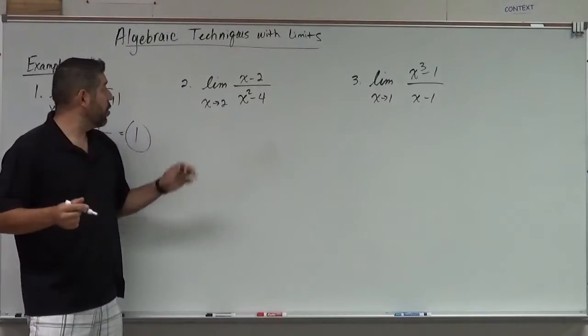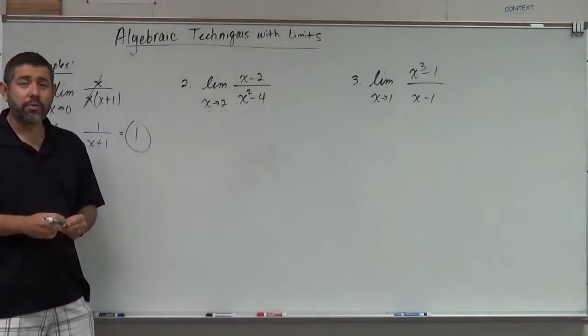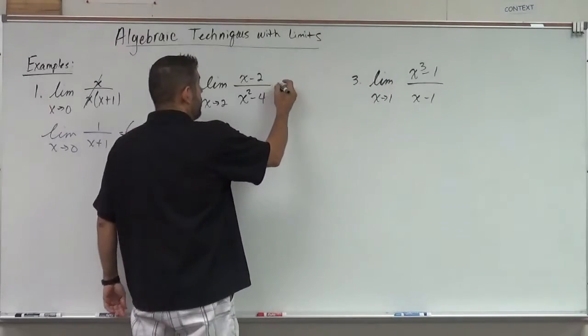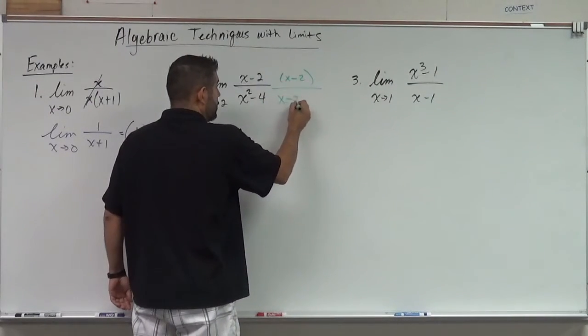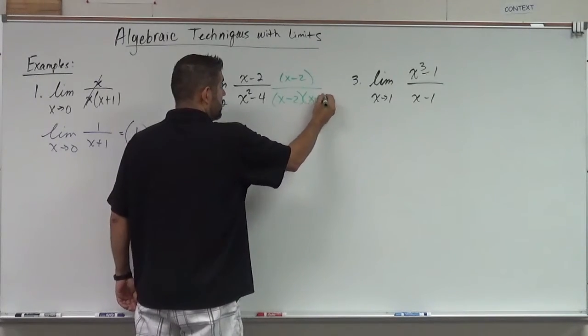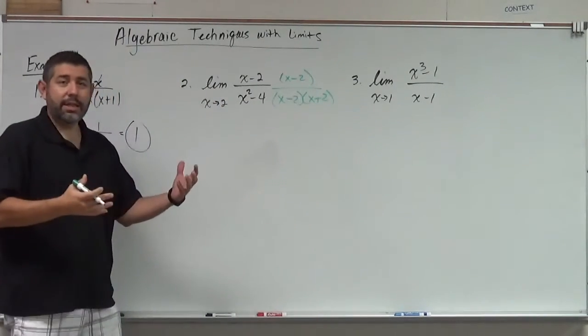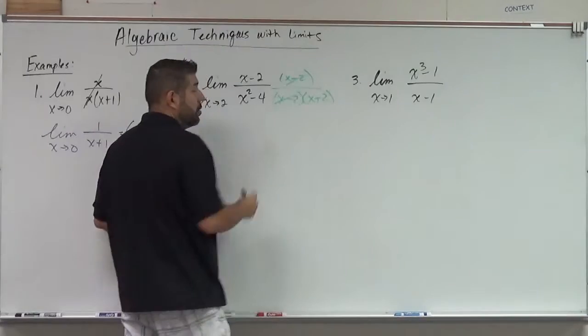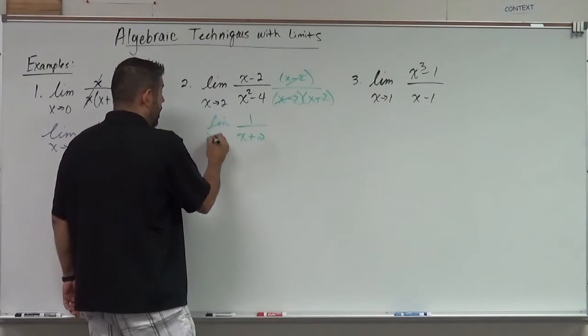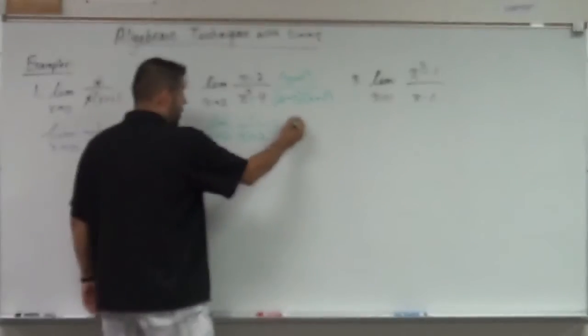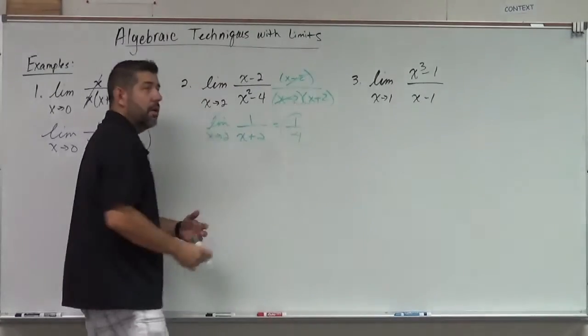x minus two, x squared minus four. If we plug in two, we're going to get zero over zero. So we can factor. We factor this. The bottom is x minus two, x plus two. And notice, x minus two, x minus two, go away. We've got one over x plus two. And when we do that limit, we're going to get one fourth.